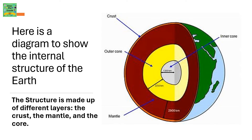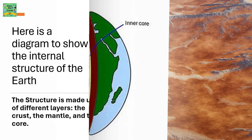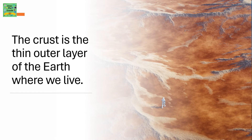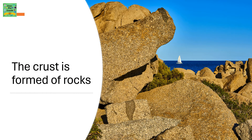Here is the diagram showing the internal structure of the Earth. The structure is made of different layers: the crust, the mantle and the core. The crust is the thin outer layer of the Earth where we live. The crust is formed of rocks.